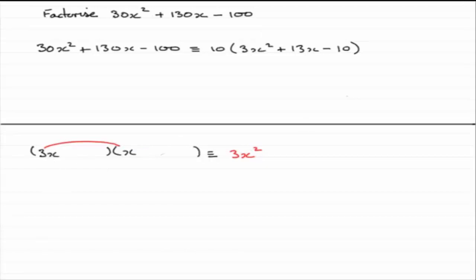Now we need to pick two numbers that we put here and here that multiply together to give you minus 10. The minus 10 that we have here. Now there's lots of combinations that give minus 10. The thing is, about being minus 10, they've got to have opposite signs.